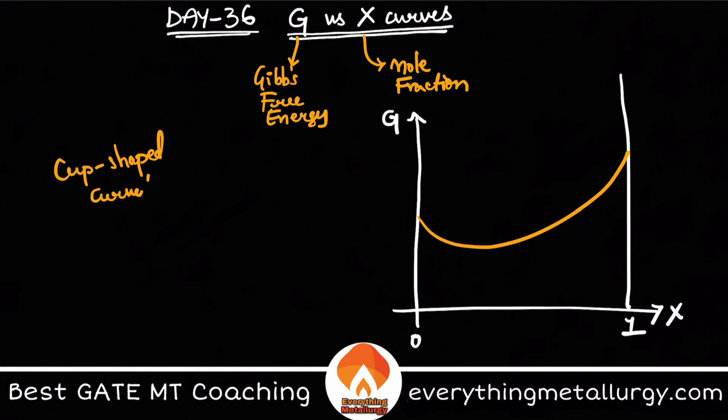So usually we have a formula for Gibbs free energy which is RT times xa ln xa plus xb ln xb. This is the simple formula which we follow, the relation between G and X. Of course you have many other modifications also.